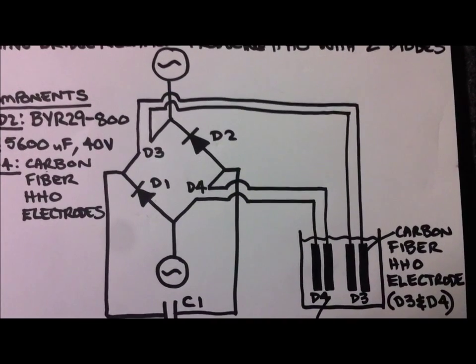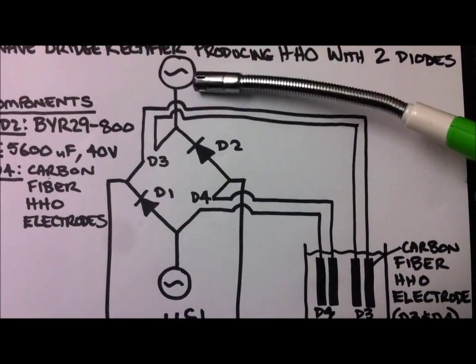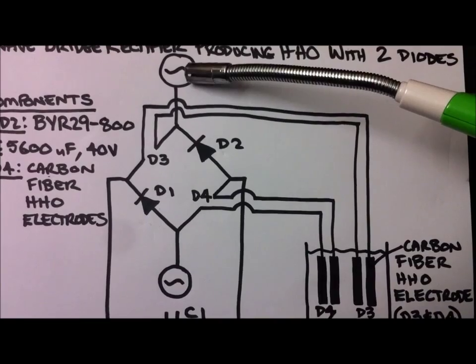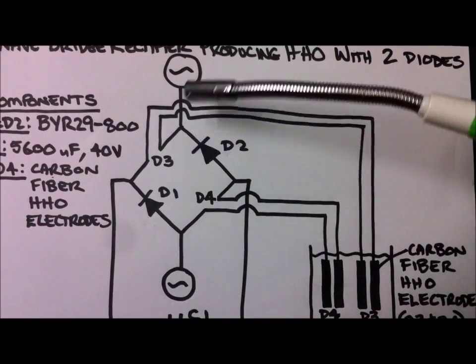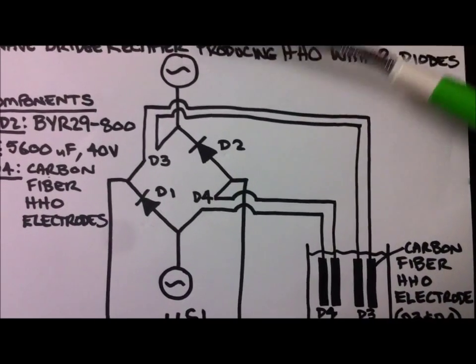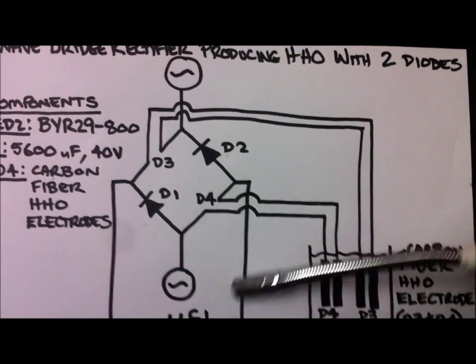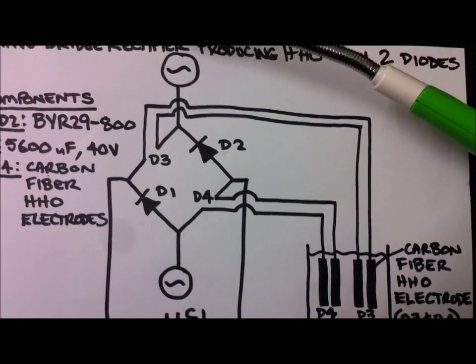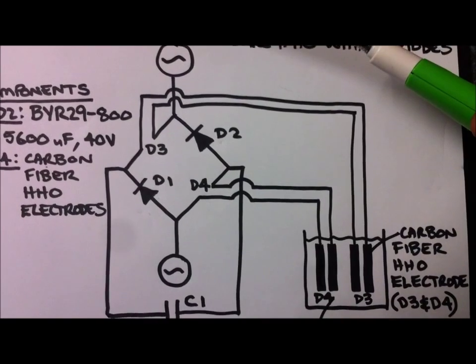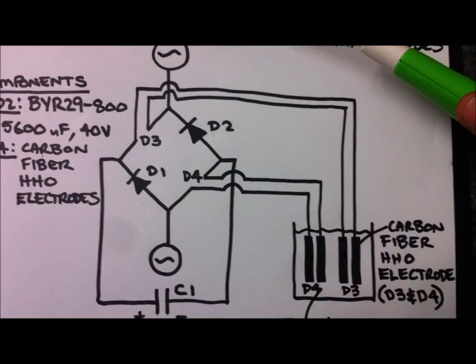So if anybody knows how I can somehow alter the mains frequency that's coming into this rectifier from 50 Hz to say a few kHz or 20 kHz or more, whether it be using some sort of LC tank circuit across the input or whatever it may be, I would love to see a schematic, otherwise I'll be doing my own research.